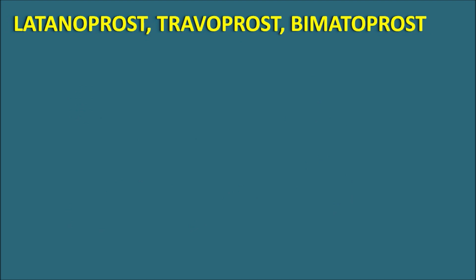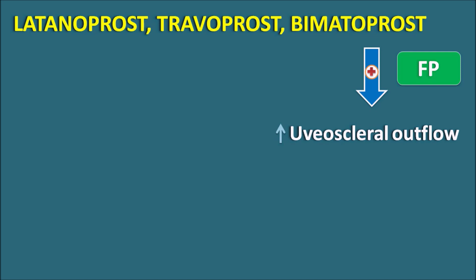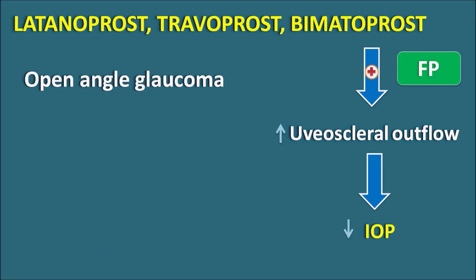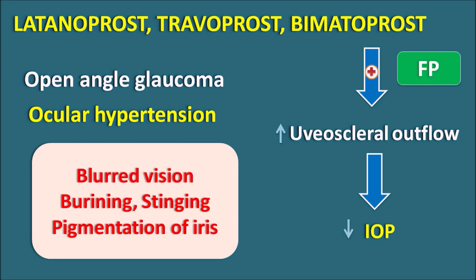Latanoprost, travoprost, and bimatoprost are all prostaglandin F2-alpha analogs with structural similarity. These drugs act on the FP receptors — the receptors for prostaglandin F2 — thereby increasing uveoscleral outflow, which results in increased excretion of aqueous humor. When aqueous humor is excreted, intraocular pressure decreases. That is why these three drugs are used in the treatment of open-angle glaucoma and to decrease intraocular pressure associated with ocular hypertension. Side effects include blurred vision, burning sensation, stinging, and increased pigmentation of the iris.